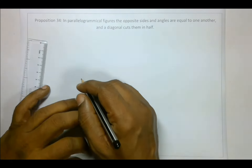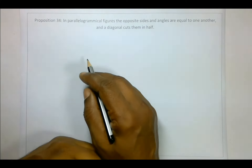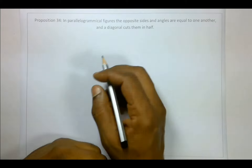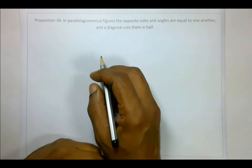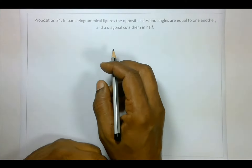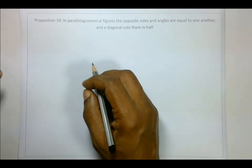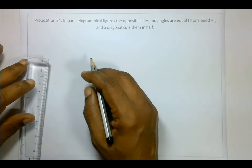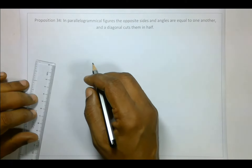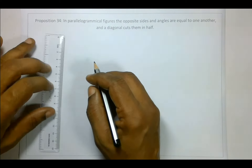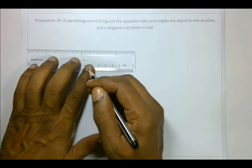Proposition 34: In parallelogramical figures, the opposite sides and angles are equal to one another, and a diagonal cuts the parallelogramical figure in half. So let's create a parallelogram.